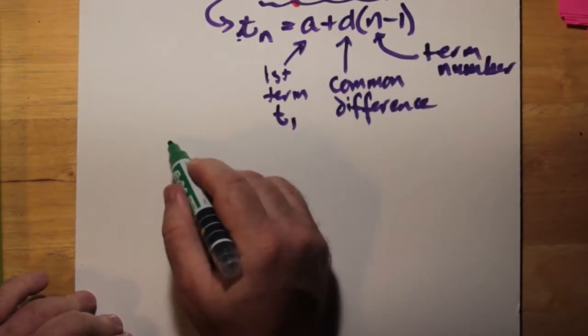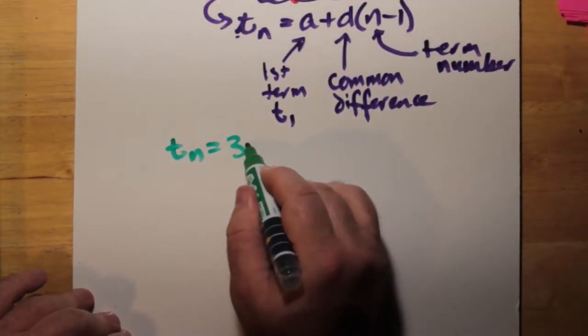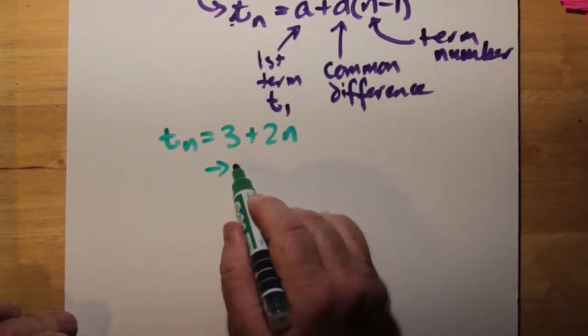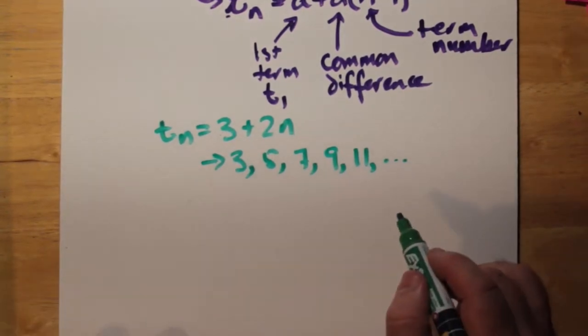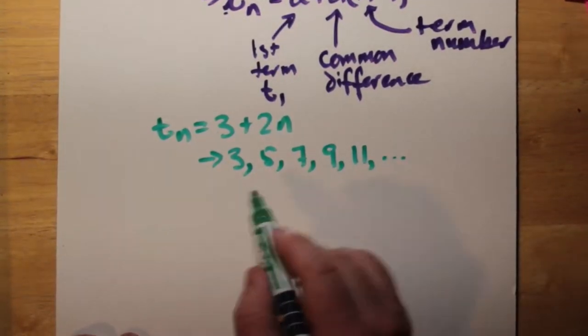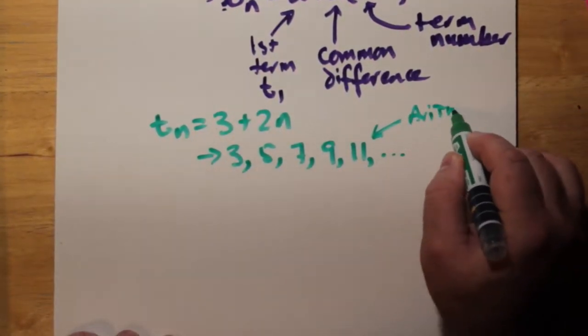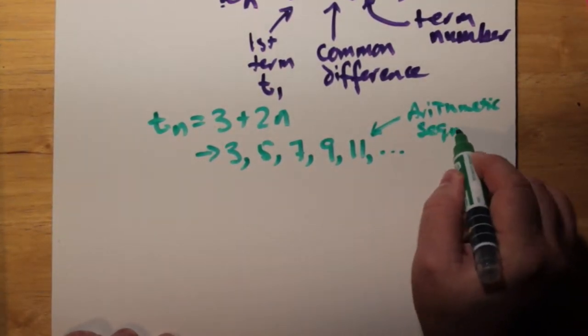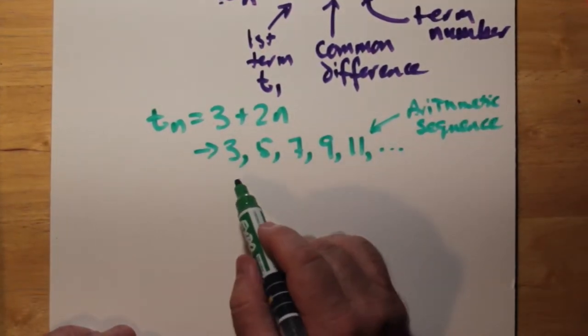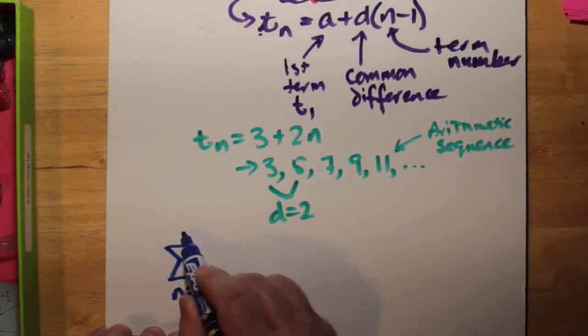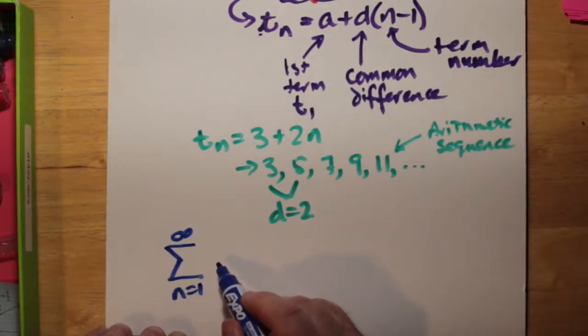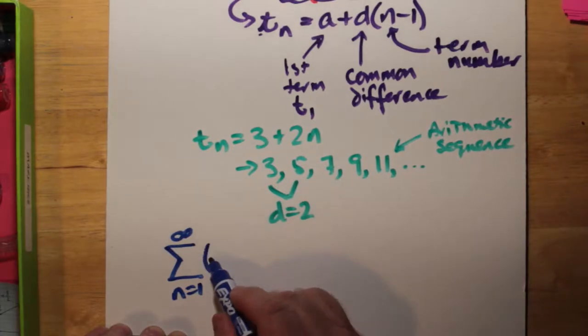Now supposing that tn is 3 plus 2n, I'm asking you to suspend your disbelief. If we expand 5 plus 2 times n minus 1, we'll get the same formula. And so this is indeed an arithmetic sequence. You can see that there's a regular difference of 2. It's just that it was simplified from 5 plus 2 times n minus 1.